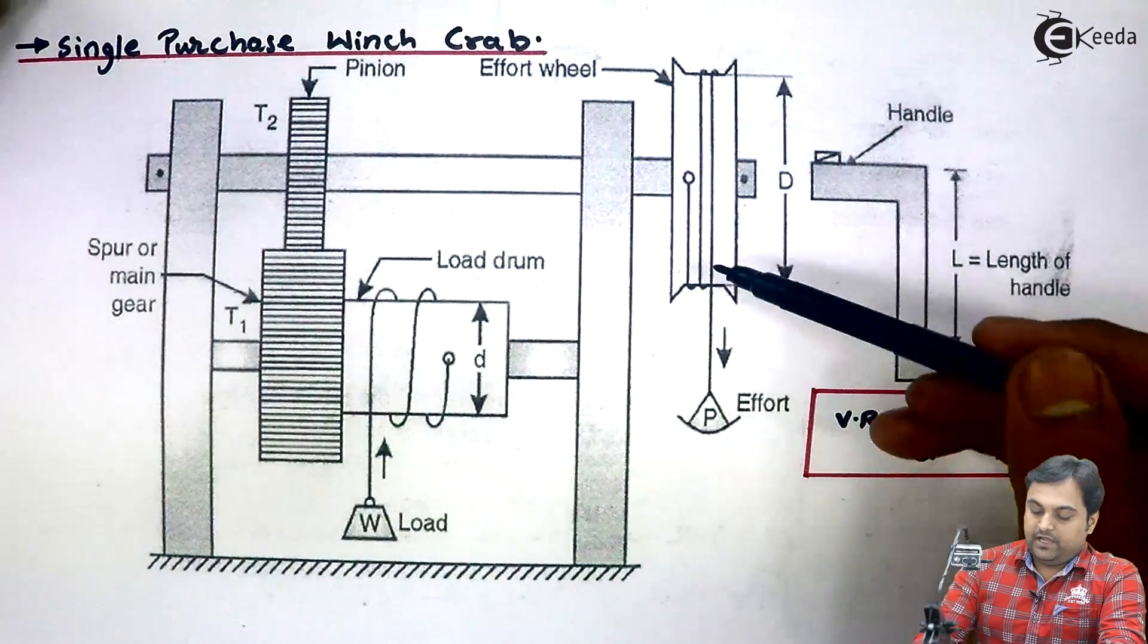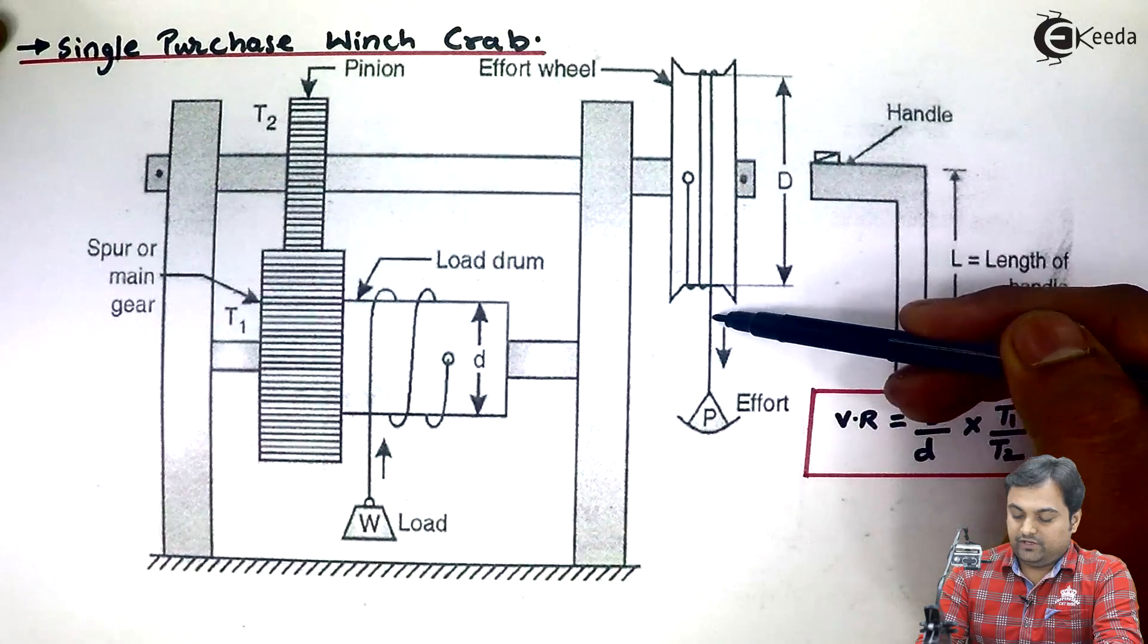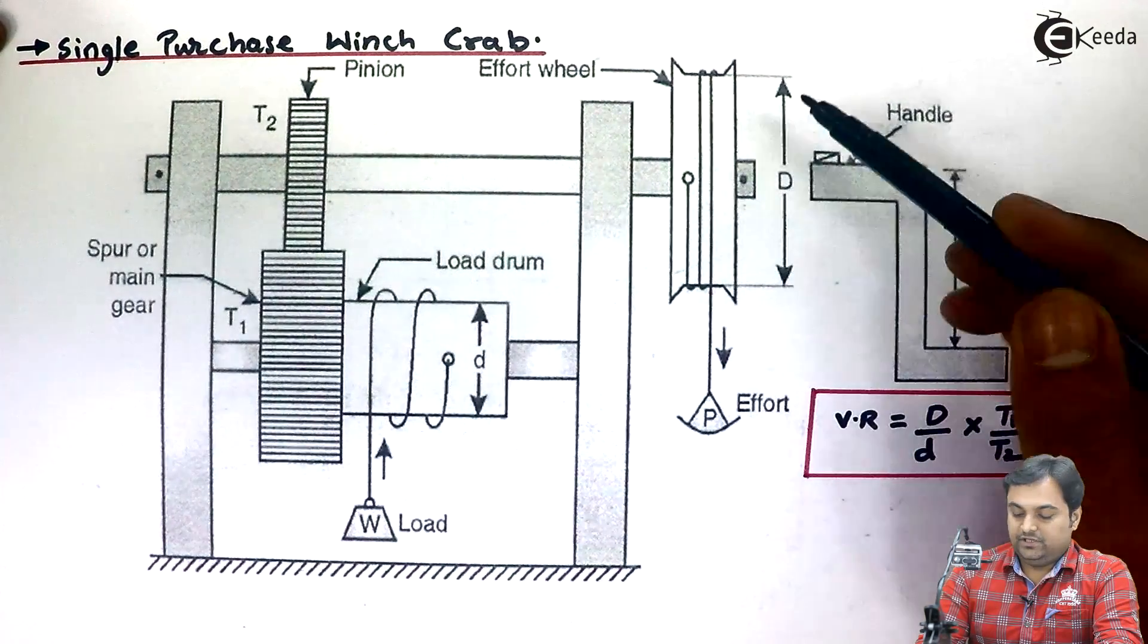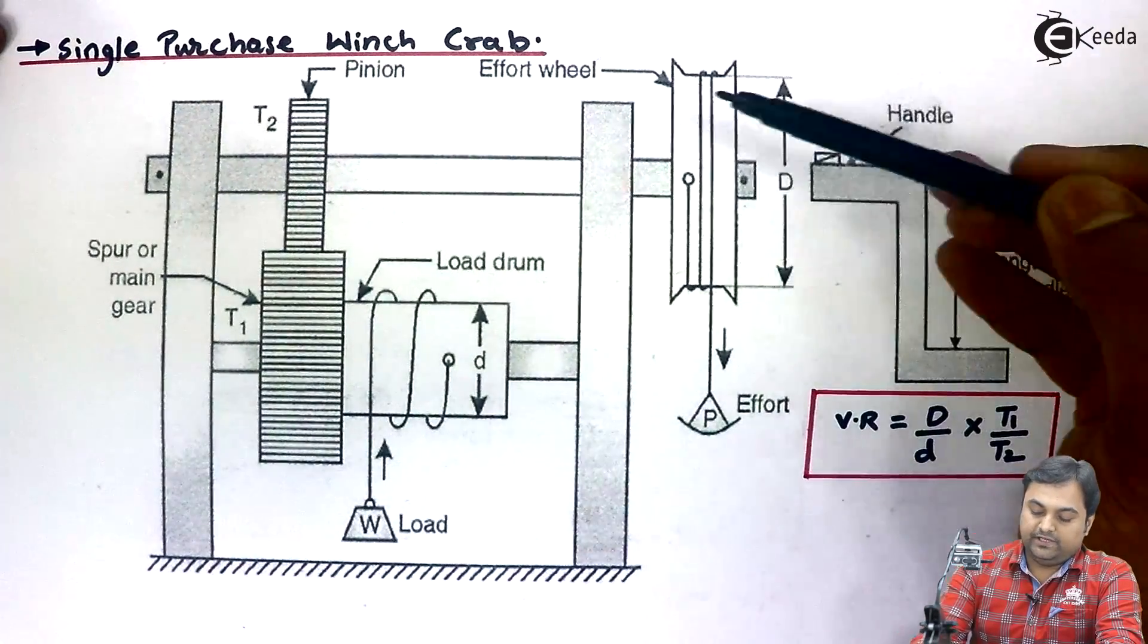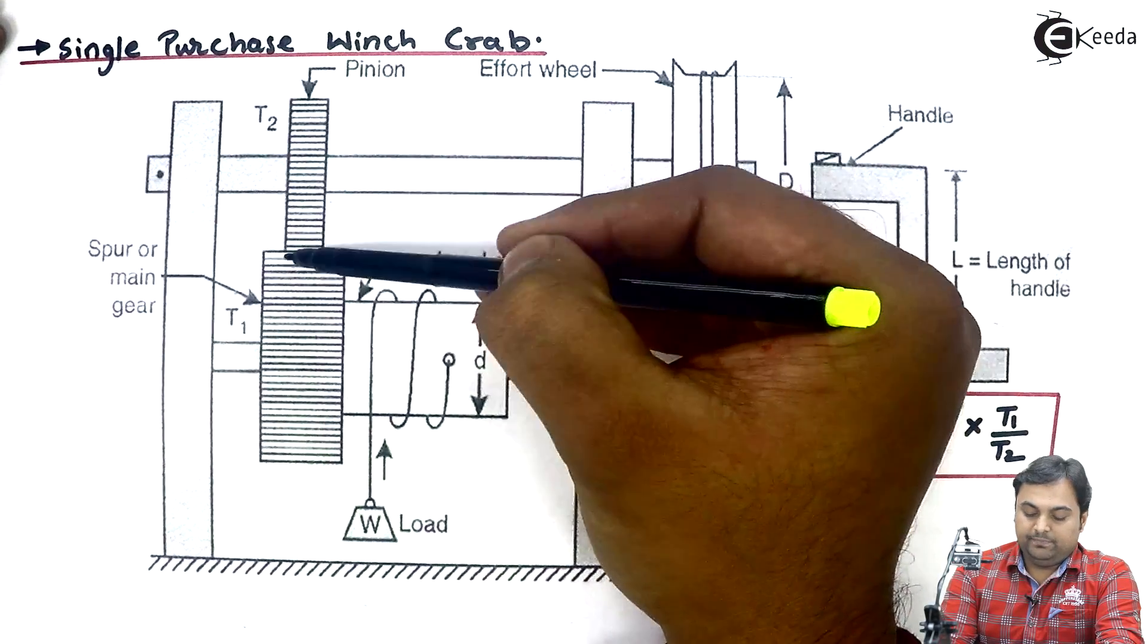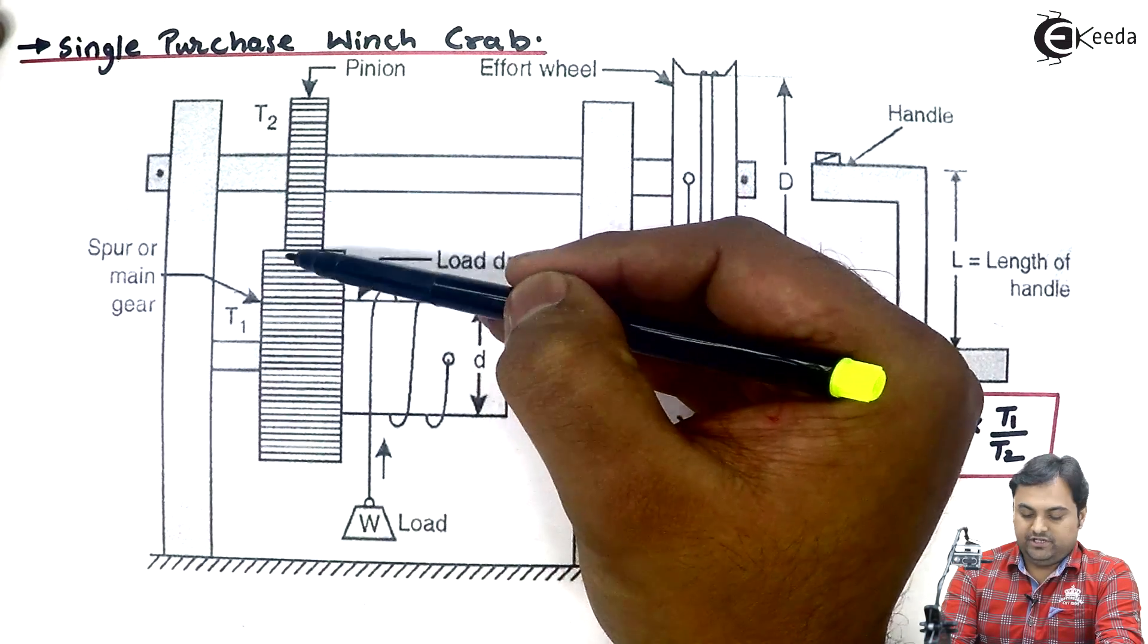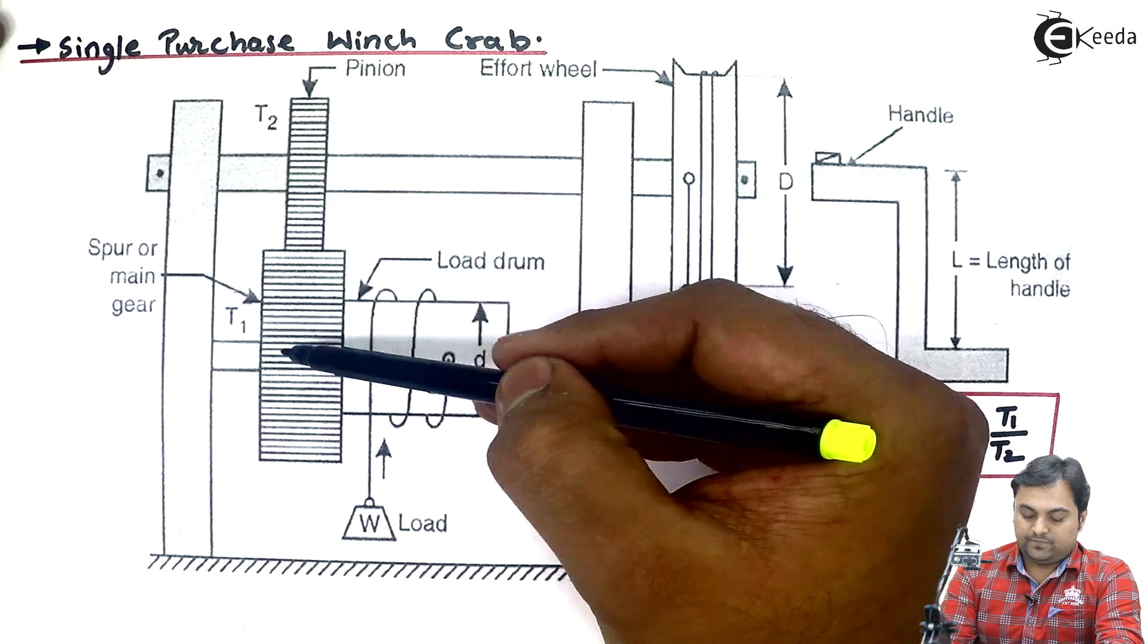Now how it functions, how it works: effort will be applied at the effort wheel by pulling this string or rope down. When the effort is applied in the downward direction, this effort wheel will be rotating. Once it starts rotating, it is connected with the help of shaft to the pinion. Pinion will also rotate, and when pinion rotates it is in mesh or in connection with the spur gear.